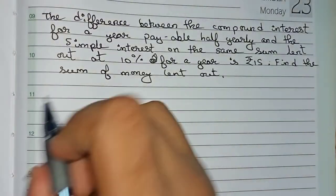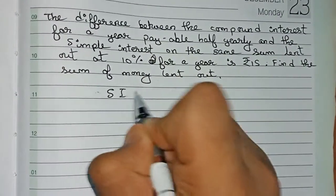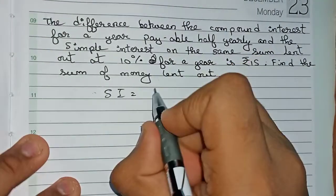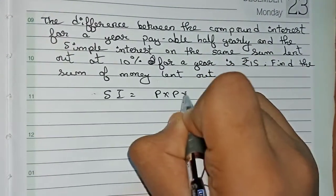So first we will find out the value of the simple interest. The formula for SI is P × R × T / 100.